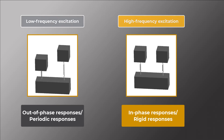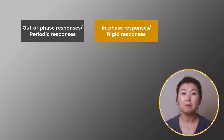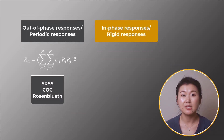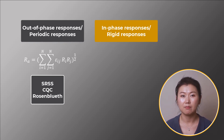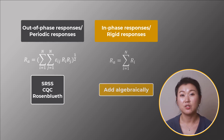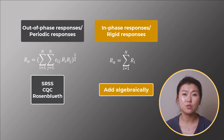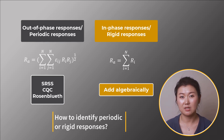In a response spectrum analysis, we'd combine periodic responses with the mode combination methods since the peak responses often don't occur at the same time. However, for rigid response, we'd prefer to add them algebraically since they may be in-phase. Our next question may be: how do we determine if the response is periodic or rigid?